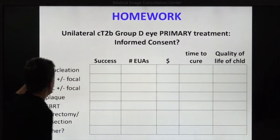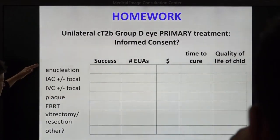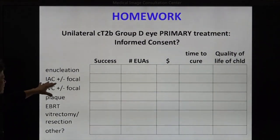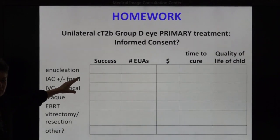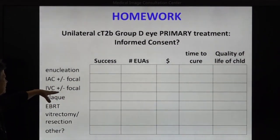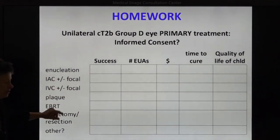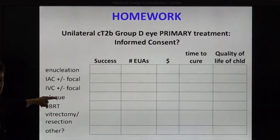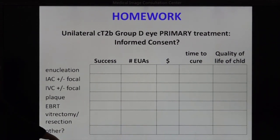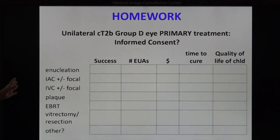So I put up the various treatments: enucleation, IAC plus or minus focal (meaning intravitreal), IVC which is not standalone, plaque which might stand alone or not, external beam radiotherapy, and enucleation slash resection — anything else you think of as a primary first treatment for the child.